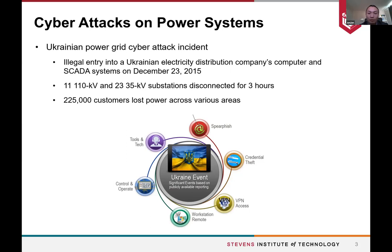More than 200,000 people lost power supply. In power systems we study security, but we usually restrict ourselves to N-1 contingency analysis in which only one component will be lost. However, in this incident more than 30 substations were disconnected, and even more feeders and lines were disconnected — a very extreme event that the system was not prepared for.